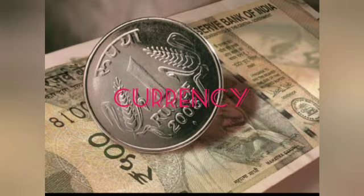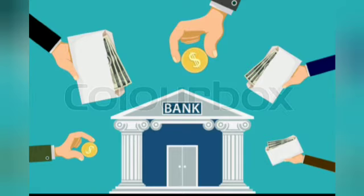Coins are metallic and are also known as currency — for example, 50 paise, 1, 2, 5, and 10 paise coins. The second component is deposit money or bank money, which refers to the deposits held at banks on the basis of which cheques could be drawn.